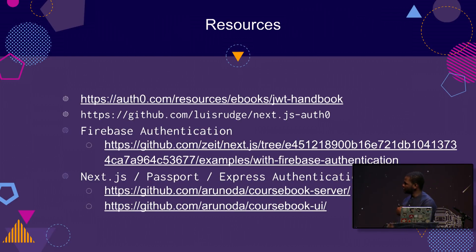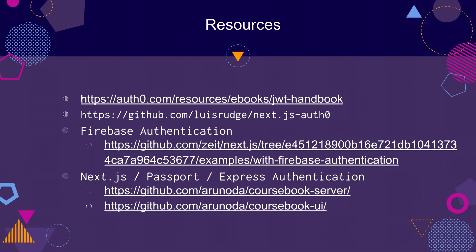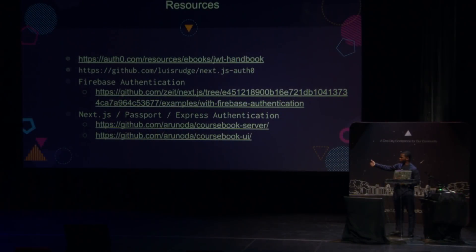If you want to know more about this, there are several resources I can recommend. First, the source code of that demo is available on GitHub. Someone also provided a Firebase authentication example which is very good — you can check that out. You might be wondering how to set up the server and your backend to verify the token. Arunoda, the creator of Next.js, has a very good example — the coursebook server and coursebook UI — he made it open source. You can check the server implementation, look at how he organized the Express routes and everything, and learn how to use your own custom server with Next.js and process it on the backend. Thank you very much.